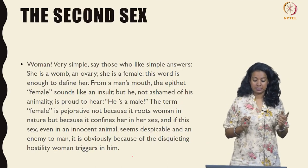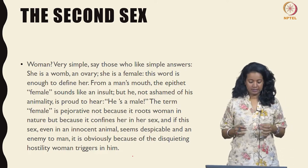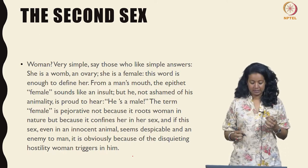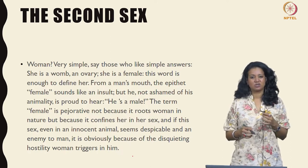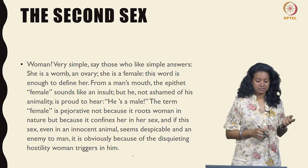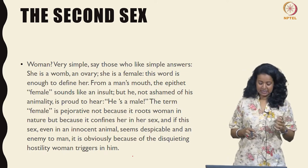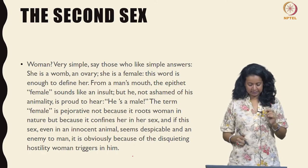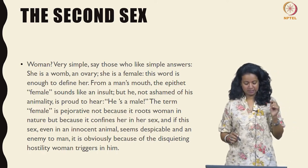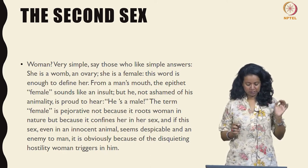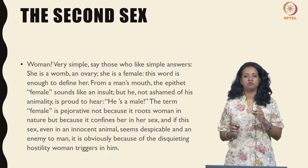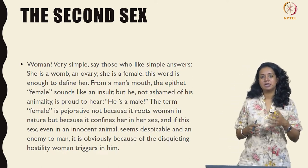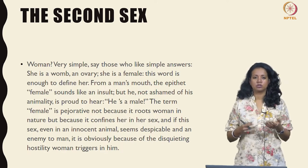She continues: 'Woman — very simple, say those who like simple answers. She is a womb, an ovary, she is a female — this word is enough to define her, as if the word itself has meaning prior to itself. From a man's mouth, the epithet female sounds like an insult. But he, not ashamed of his animality, is proud to hear he is a male. The term female is pejorative not because it roots woman in nature, but because it confines her in her sex. And if this sex, even in an innocent animal, seems despicable and an enemy to man, it is obviously because of the disquieting hostility woman triggers in him.' Pay attention to where the author roots this hostility — she says man is closer to culture and woman to nature, therefore woman just has sex as her identity.